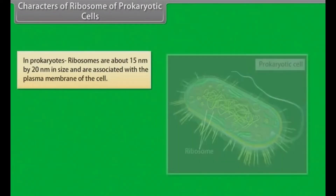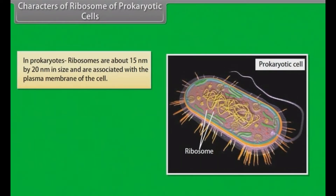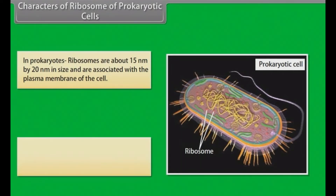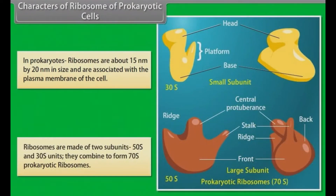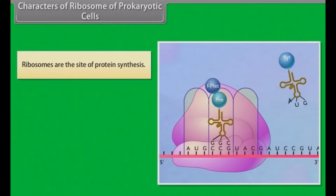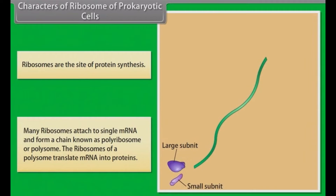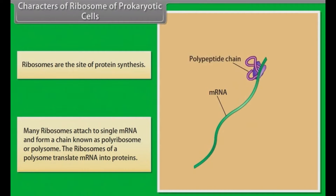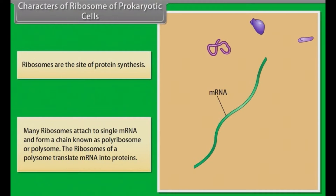In prokaryotes, ribosomes are about 15 nm by 20 nm in size and are associated with the plasma membrane of the cell. Ribosomes are made up of two subunits — 50S and 30S — which combine to form 70S prokaryotic ribosomes. Ribosomes are the site of protein synthesis. Many ribosomes attach to a single mRNA and form a chain known as a polyribosome or polysome, which translates mRNA into proteins.